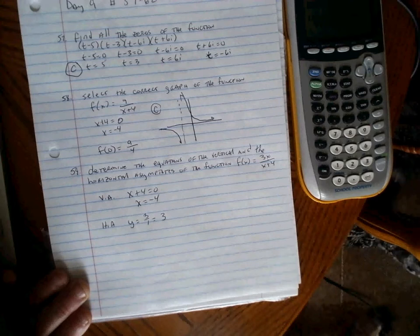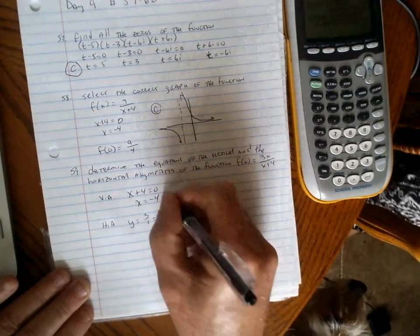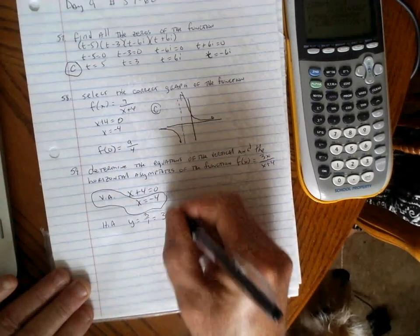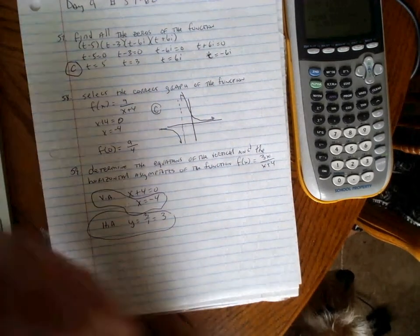There's no correct answer provided on this, but the vertical asymptote is x equals negative 4 and the horizontal asymptote is y equals 3.